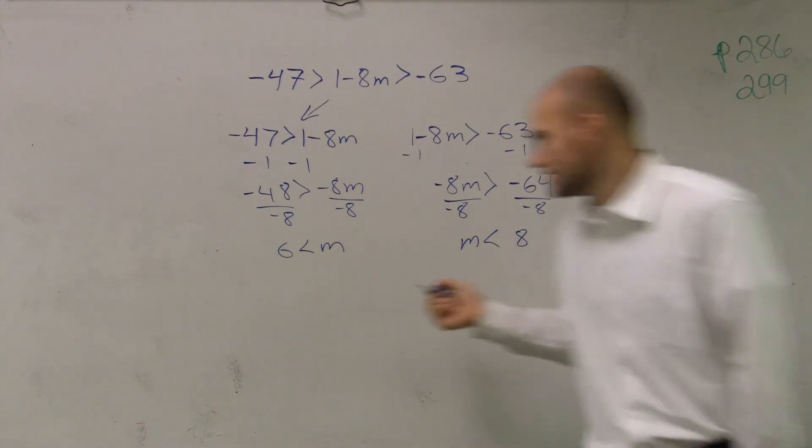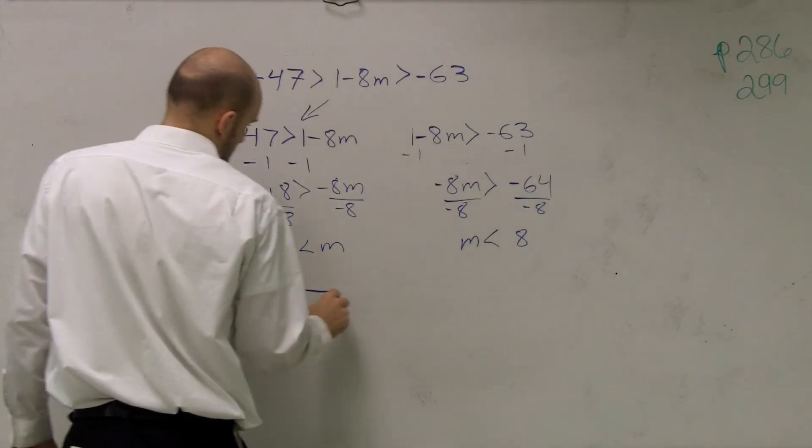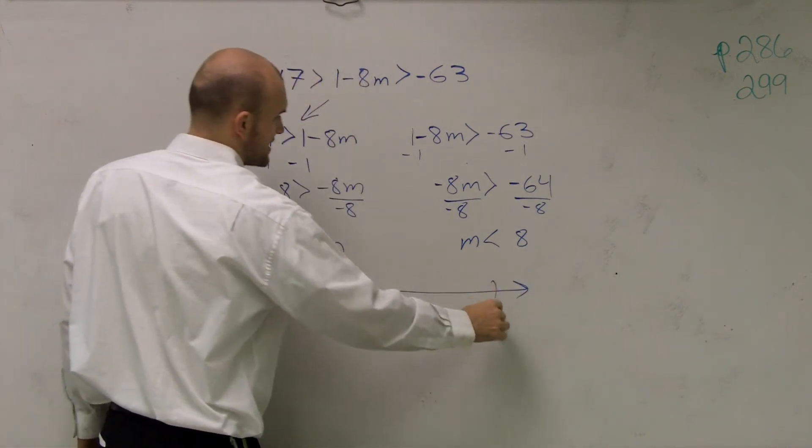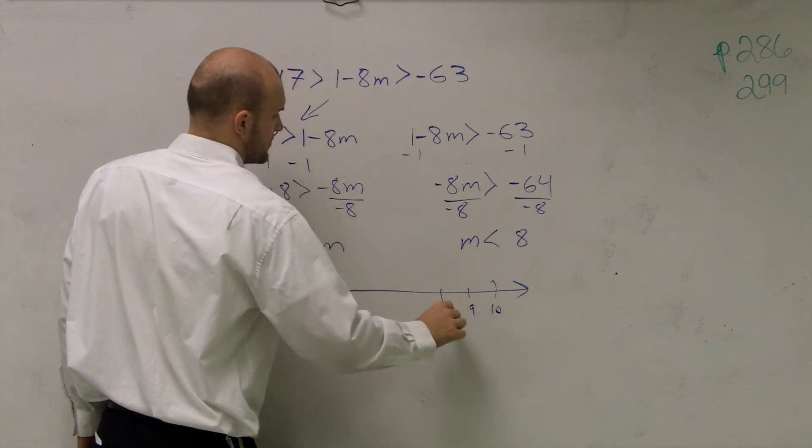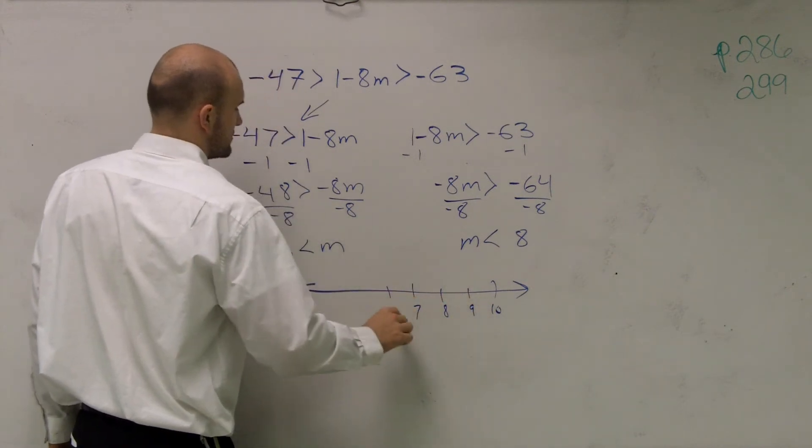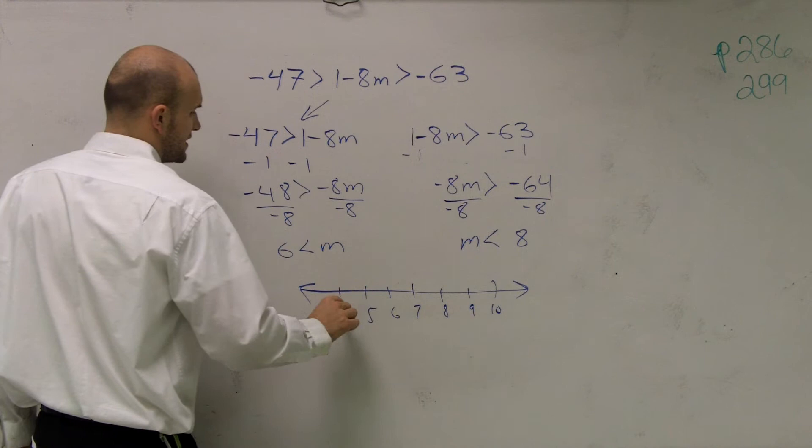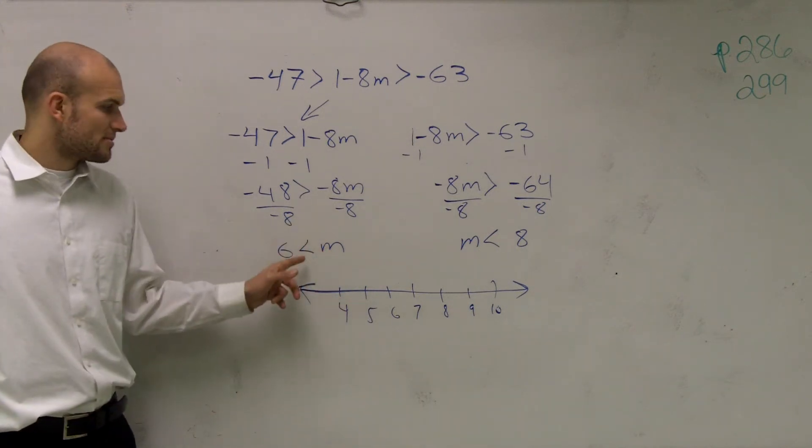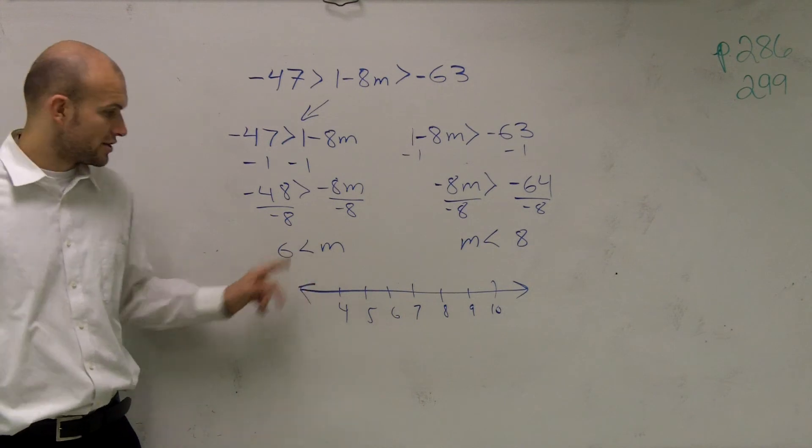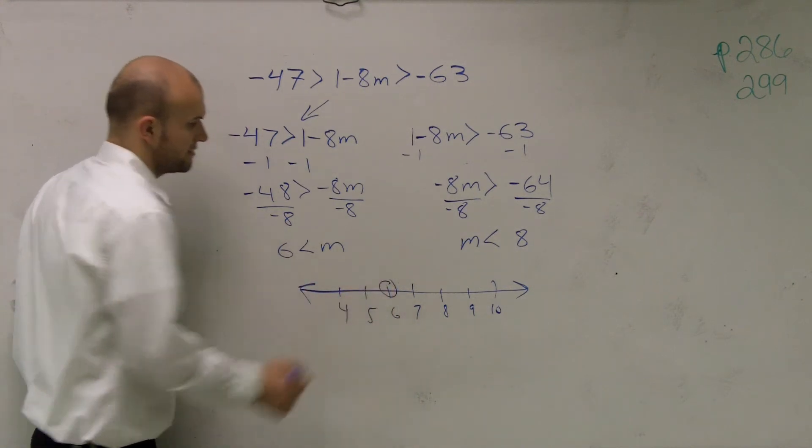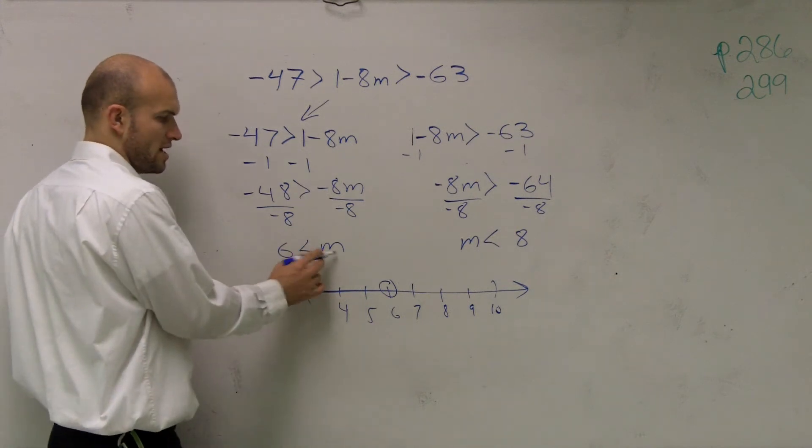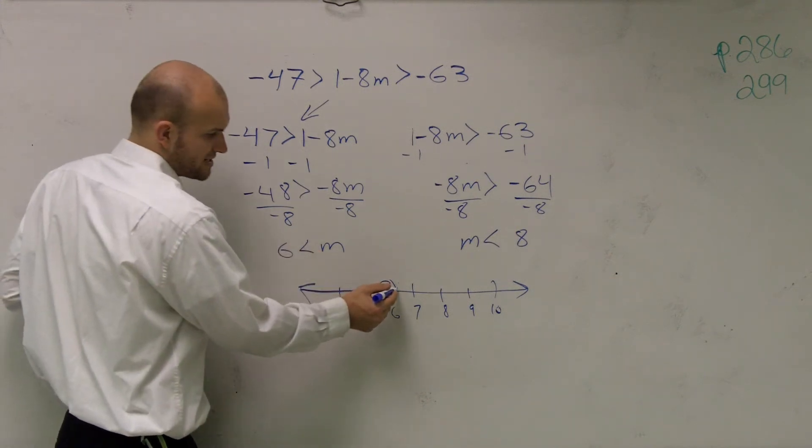So what we see here, when I have my graph, let's go to 10, 9, 8, 7, 6, 5, 4. So what we notice is m is all numbers greater than 6, right? So I go to 6 and I make a nice open dot. It's not going to be closed because that's just greater than. So what numbers are greater than 6? Well, that's going to go in this direction.